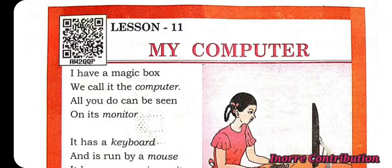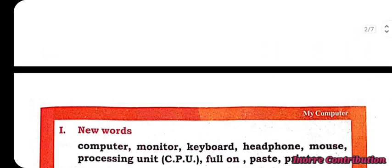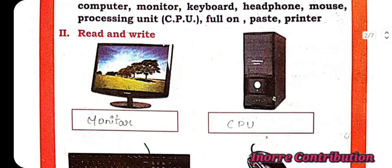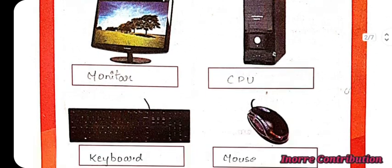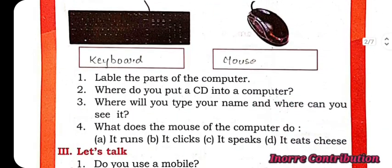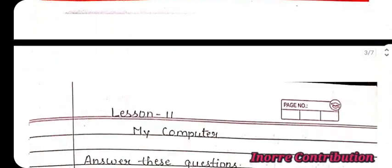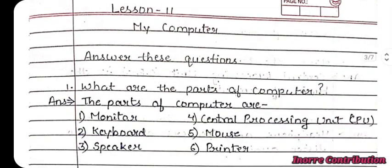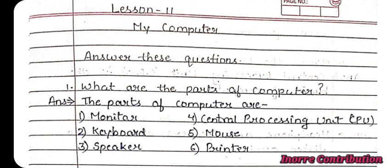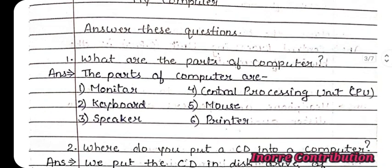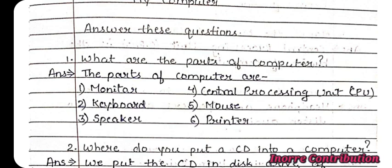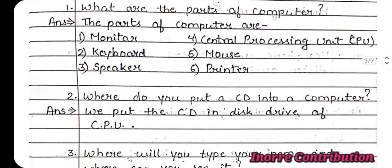Class 5 English lesson number 11: My Computer. Read and write. First, the parts of a computer: monitor, CPU, keyboard, and mouse. Answer these questions. First question: What are the parts of a computer? Answer: The parts of a computer are monitor, keyboard, speaker, central processing unit (CPU), mouse, and printer.